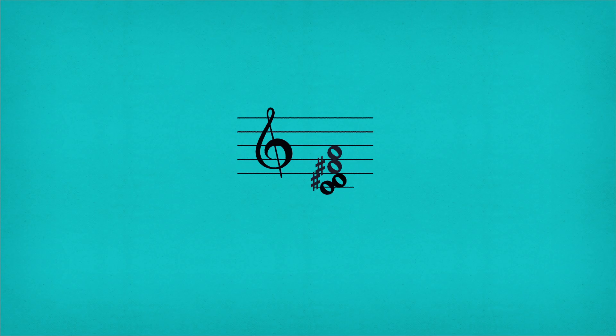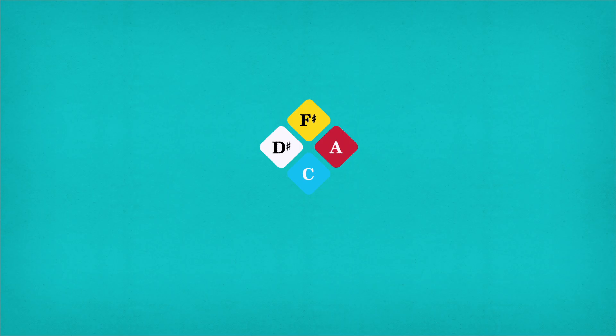On a musical staff, an inversion looks like this, but we can also overlay it onto our square and get this.